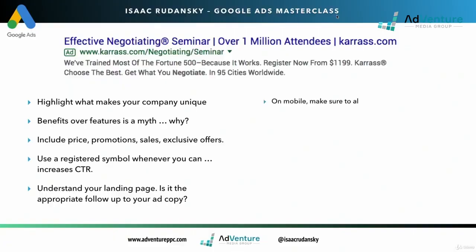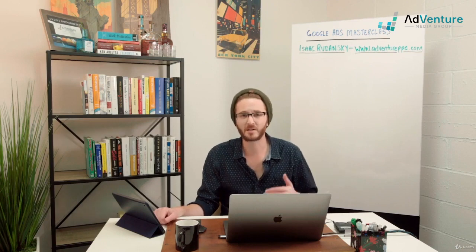More and more importantly now, you need to start thinking about mobile devices. So on mobile, make sure to always show call and location extensions if applicable. People on mobile devices tend to want to either be able to text message the business, call the business, or see locations.